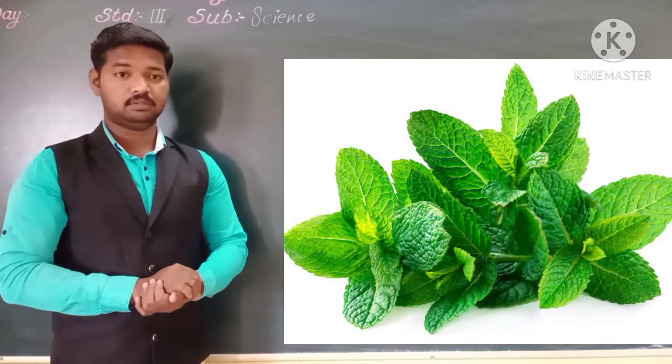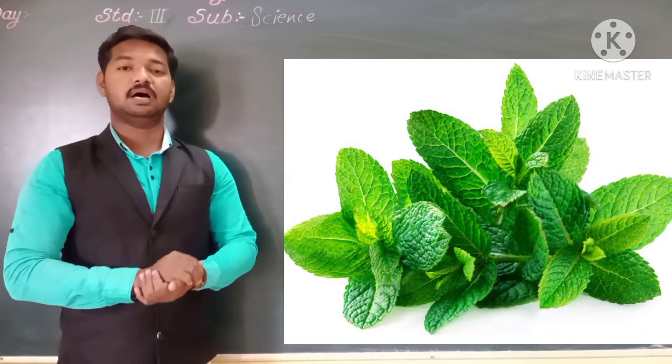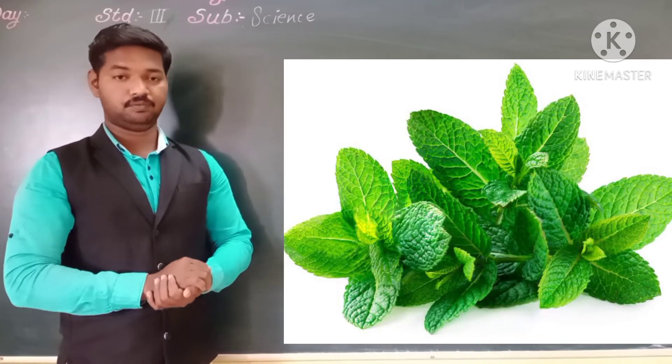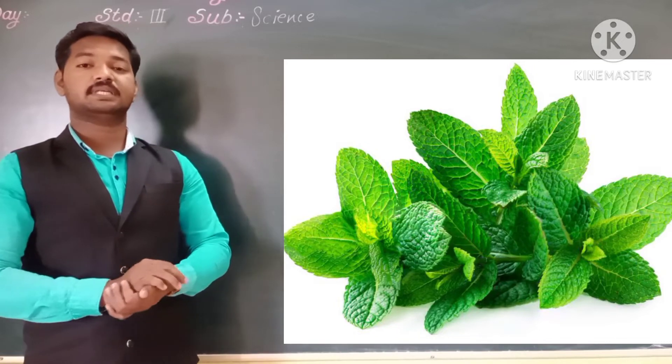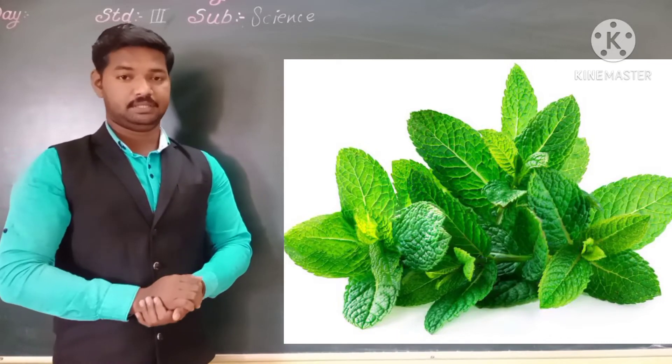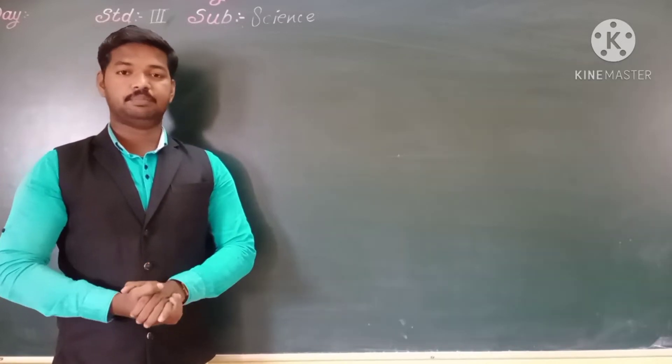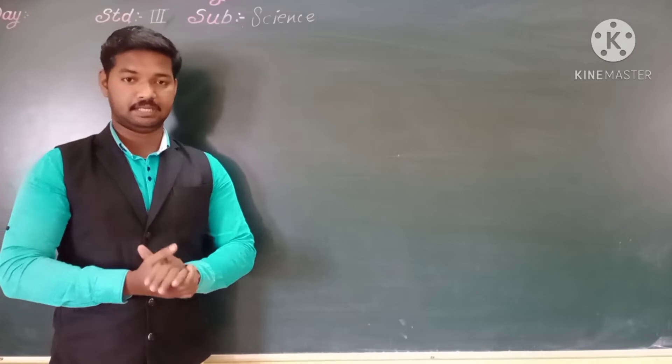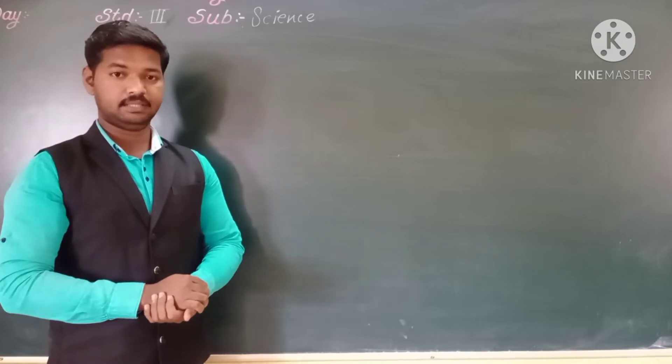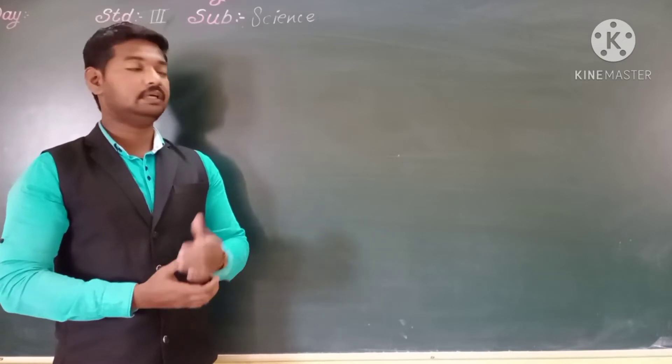If you observe properly, mostly leaves are in green color. Why? Because leaves contain a pigment that is chlorophyll. Chlorophyll helps the plant to absorb sunlight.